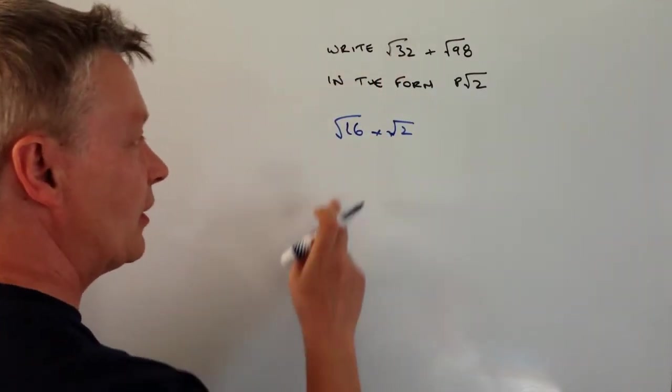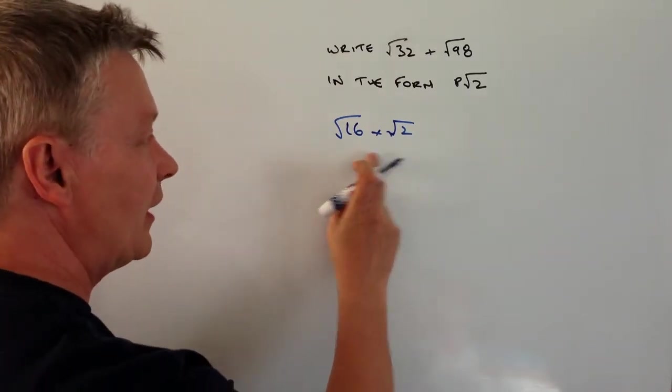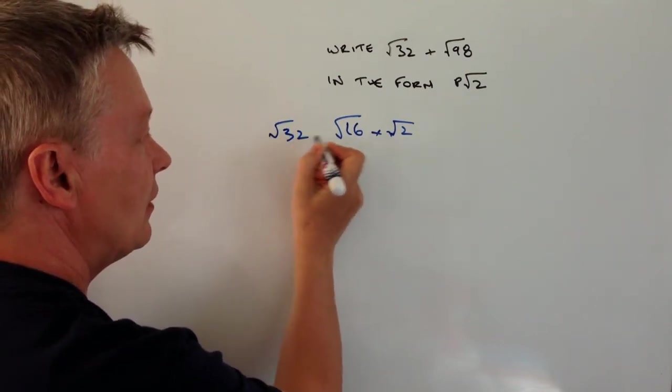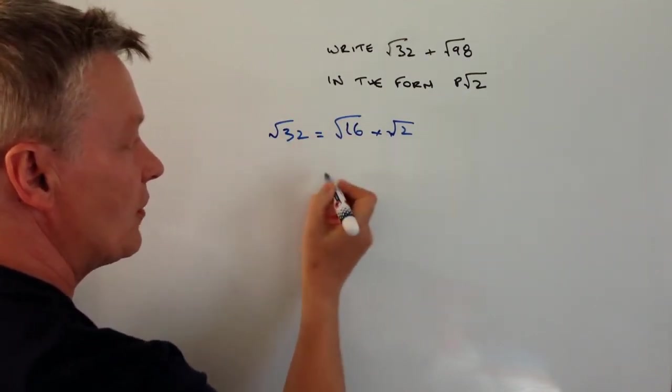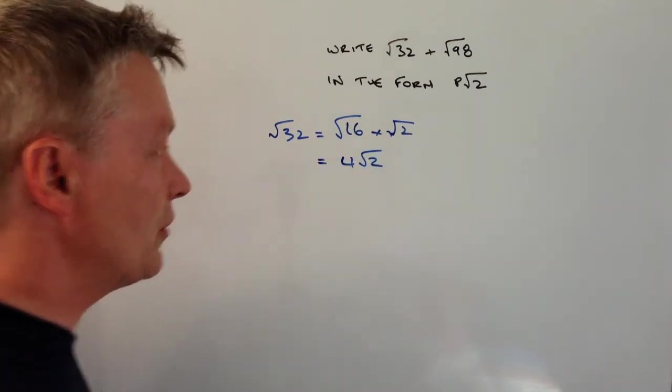Well, that's okay because 16 is a square number, so therefore I can simplify root 32 into this. I can say root of 16 equals 4, and root 2 is 4 root 2.